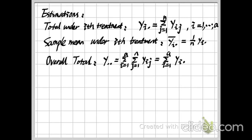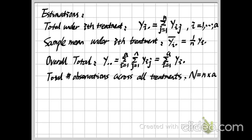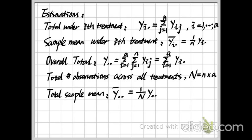Next is the overall total, which is the sum over both i from 1 to a and j from 1 to n. We also have the total number of observations over all treatments. Assuming each treatment has the same number of observations n, the total is capital N equals n times a. The overall sample mean is the overall total divided by capital N.